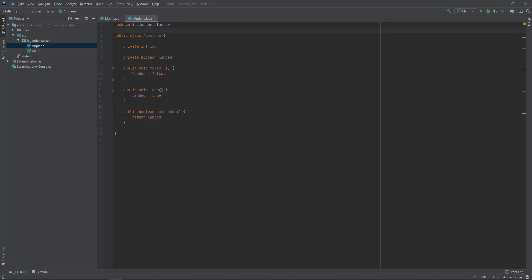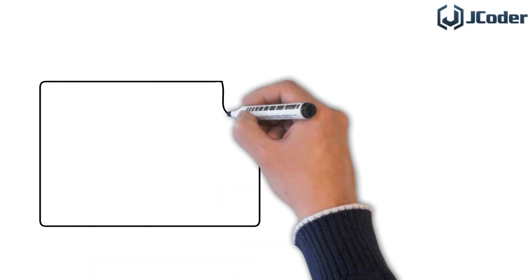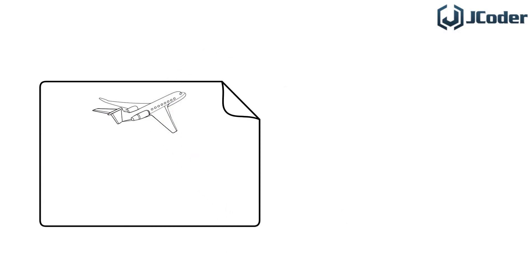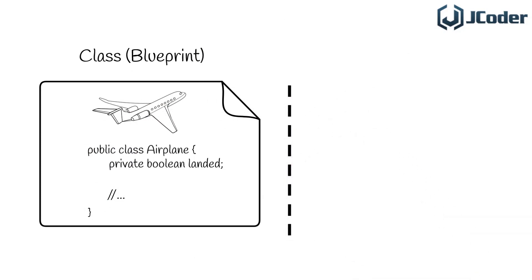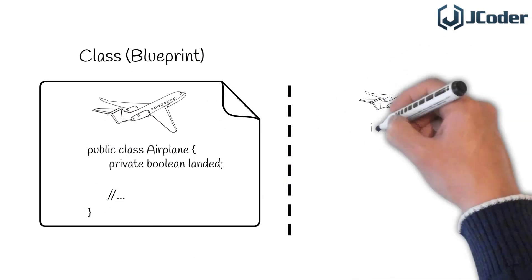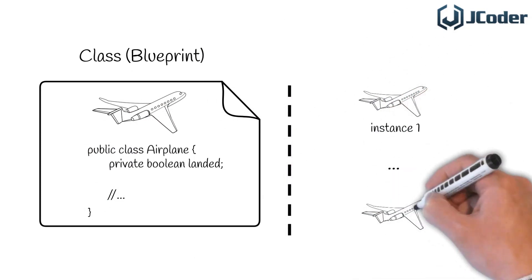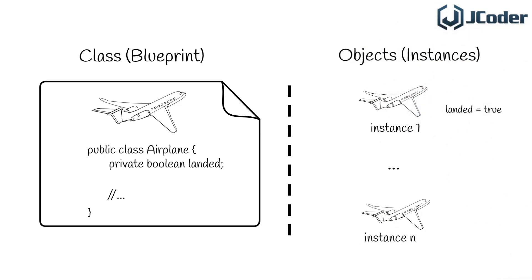It can sound a bit confusing, so what does this actually mean? Let's take a look again at our airplane example from our classes and objects video. In that example we have a non-static boolean field that we called landed. As this is a non-static field, it means that every instance or every object that we create will have its own landed variable associated with it. So if I create three airplane objects, each of them will have a separate landed variable — they are independent from each other. This is the same as we saw in the debugging step in our classes and objects video.